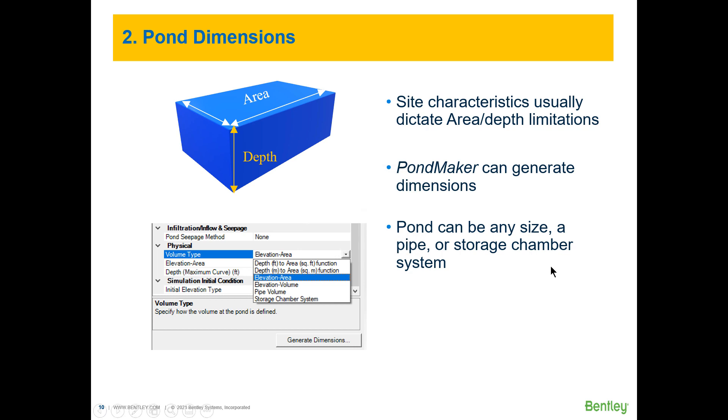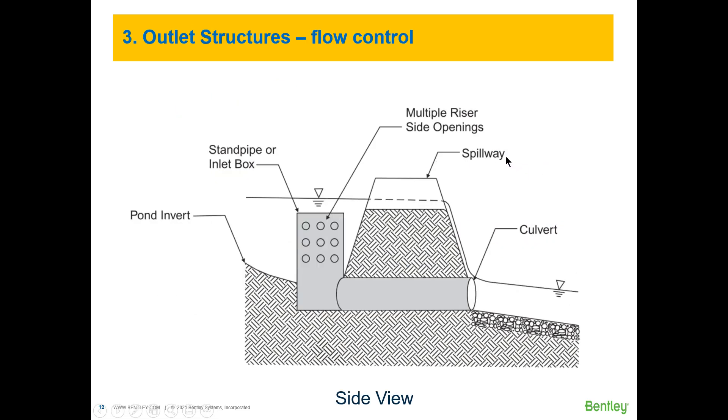Now that we have an estimated storage volume we now have to figure out the pond's dimensions that will fit that volume. Let's say you have a limited surface area on the site. If you're limited by the area then all you have to play with is the depth. You can have a pond of any shape, any size but it can also be a buried pipe or a storage chamber system like the one we're showing here.